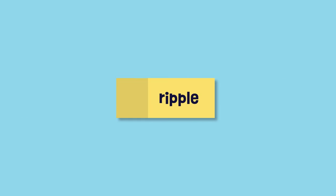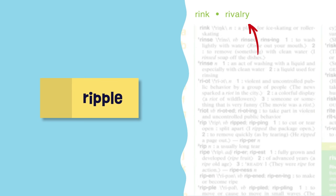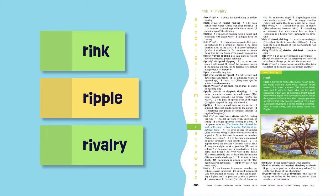So let's say you're looking for the word ripple. First, you'll find the section with all the words that begin with R. Then you'll use the guide words at the top of each page to find the page with the entry for ripple. This page has rink and rivalry as its guide words. Since the RIP of ripple comes after the RIN of rink and before the RIV of rivalry, we know that this is the page ripple is on.